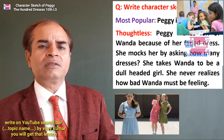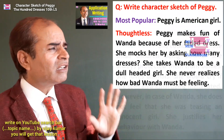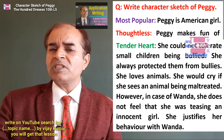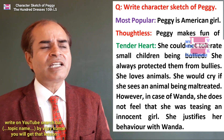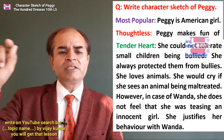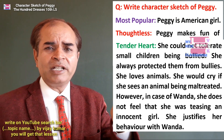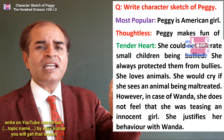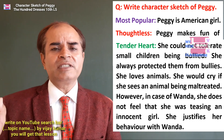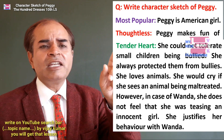Write her good qualities as well as bad ones. She has a tender heart — she troubles Wanda herself, but she cannot bear to see others being troubled, whether they are younger children in her class, junior students, or even animals. She always protects small children from bullies and loves animals; she would cry if she sees an animal being maltreated.